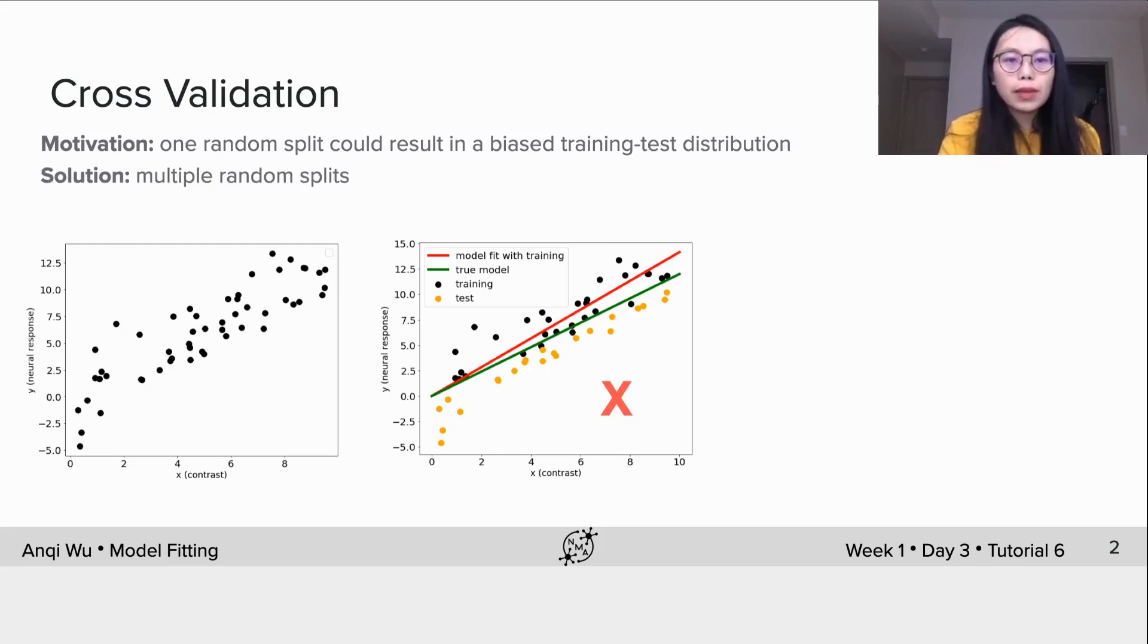One solution would be doing multiple random splits and cross-validate the performance on different splits. This is what we usually call as cross-validation. Specifically, if we do the multiple random splits with k-folds, this is known as k-fold cross-validation.